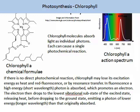On the left hand side of the screen you will see the molecular formula for chlorophyll, which is a very complicated compound. On the right hand side you can see what's called an action spectrum of chlorophyll A. Action spectrums are visualisations of where light is absorbed. You will see that chlorophyll A absorbs light mostly at 430 to 490 nanometres and then again at 659. Areas between 500 and 600 nanometres are hardly absorbed at all, and areas above 700 and below 400 are also not absorbed. Chlorophyll absorbs molecules as individual photons, and each can cause a single photochemical reaction. If there is no direct photochemical reaction, chlorophyll may lose its excitation energy as heat and red fluorescence — essentially a waste.